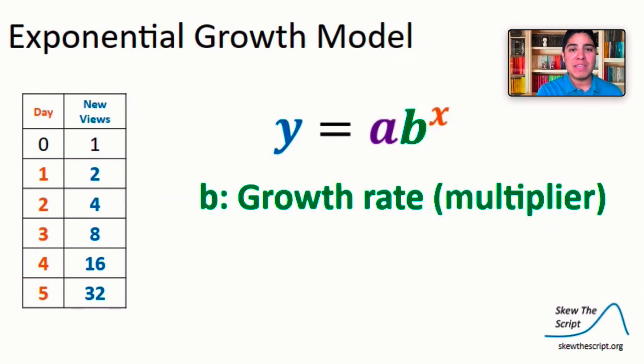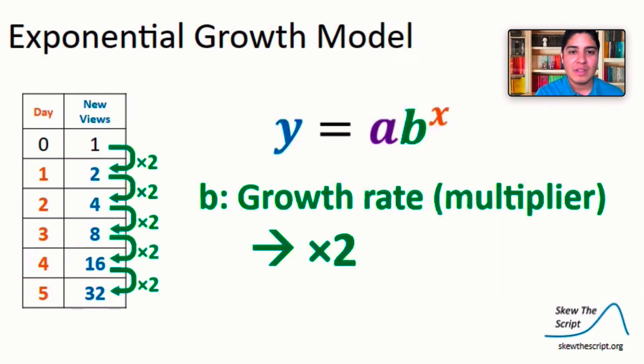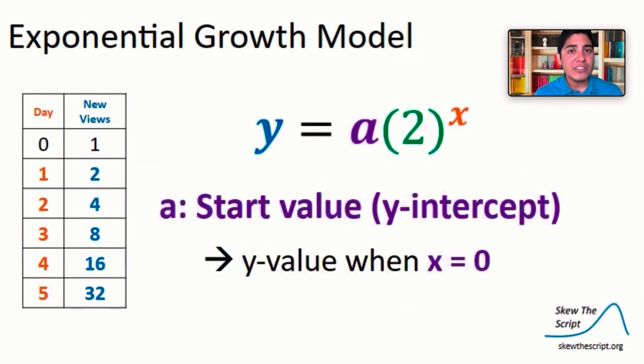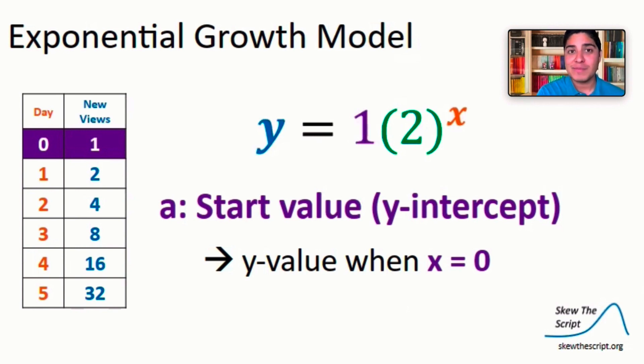Let's identify b in the equation. When we look at the table, we can see that each new y value is the product of two and its previous value. Hence, we would call two our growth factor, or our growth rate. Our initial value is indicated by the a term in the equation. We also call this a start value, or the y-intercept. And remember, this is when x equals zero. Here in our table, when x equals zero, we see that y equals one. Hence, a must be one.